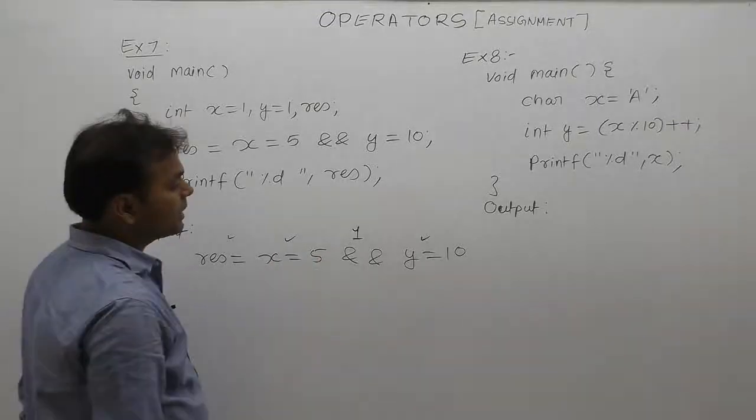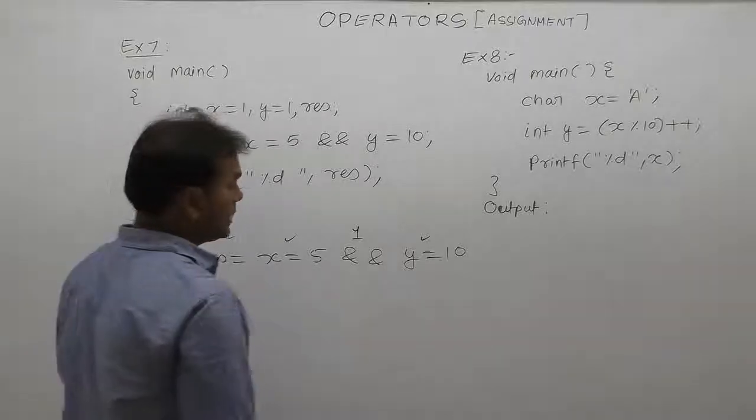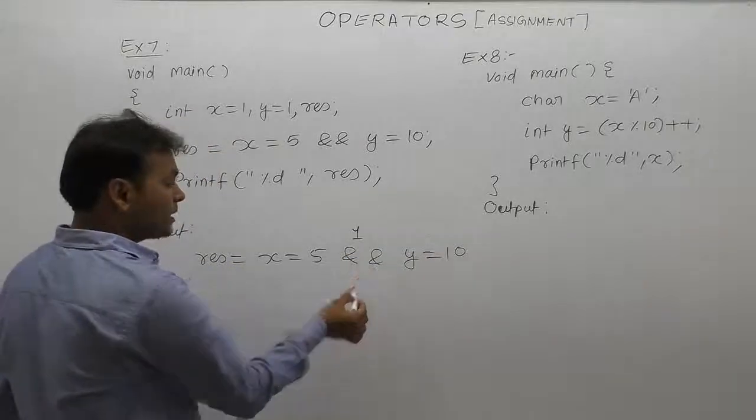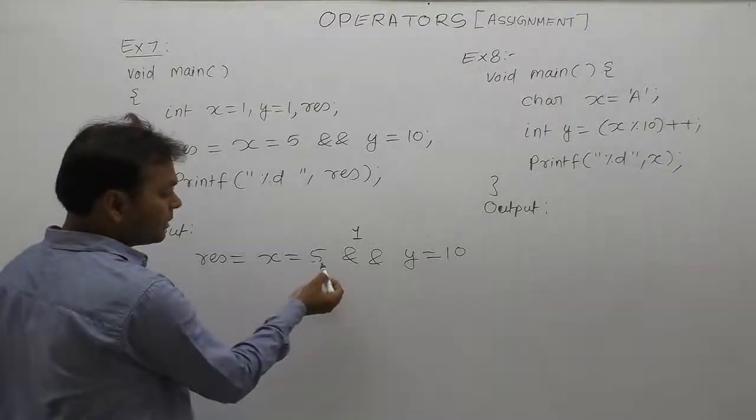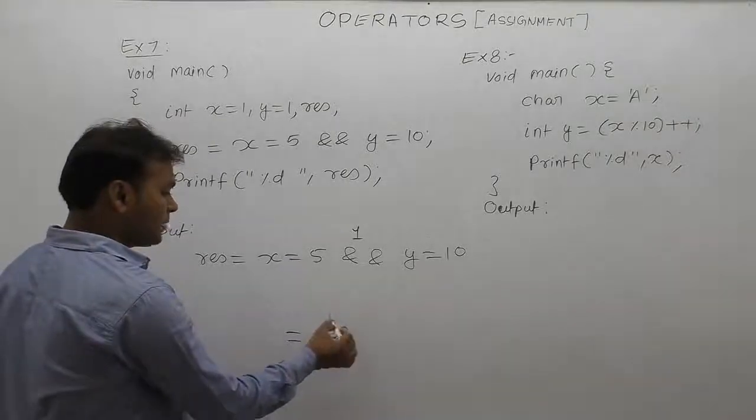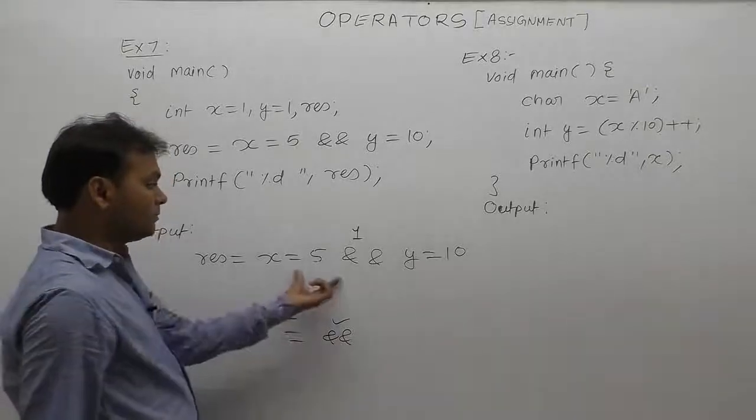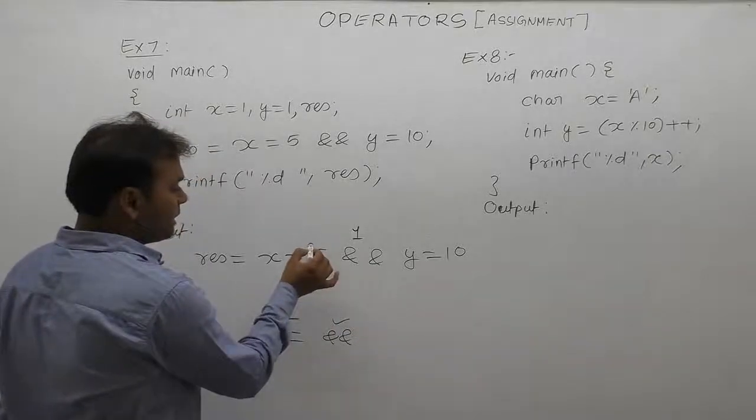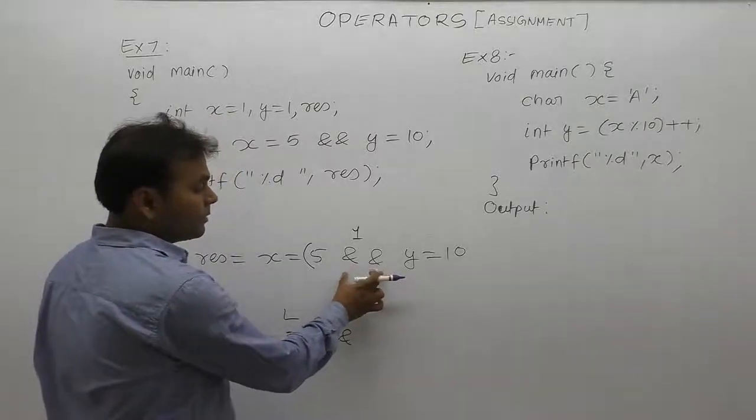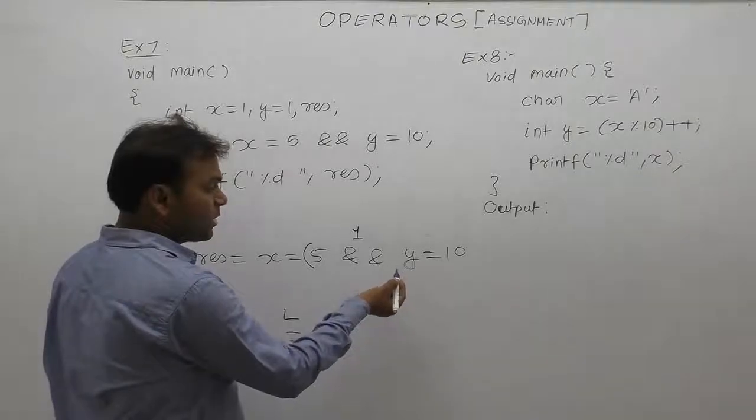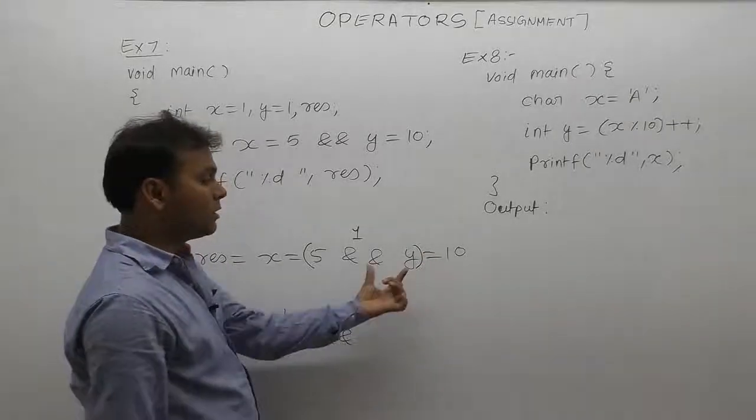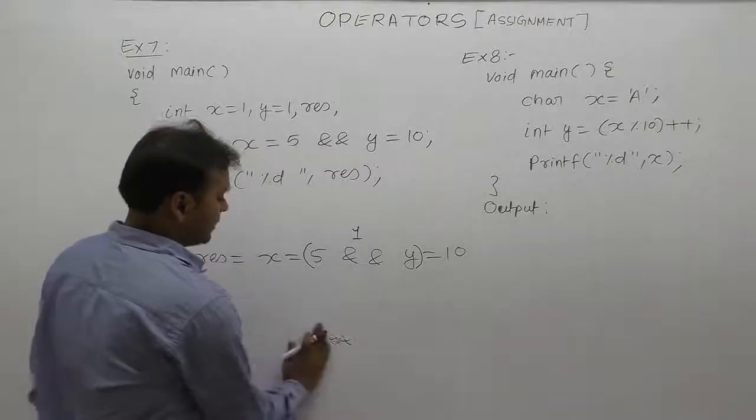This case is solved by logical AND operations. For AND, identify the operands. In the case of AND, the first operand will be considered up to the highest priority operator. Similarly, the second operand for AND will also be considered up to the highest priority operator found. The second operand will be y, not assignment or y equals to 10.